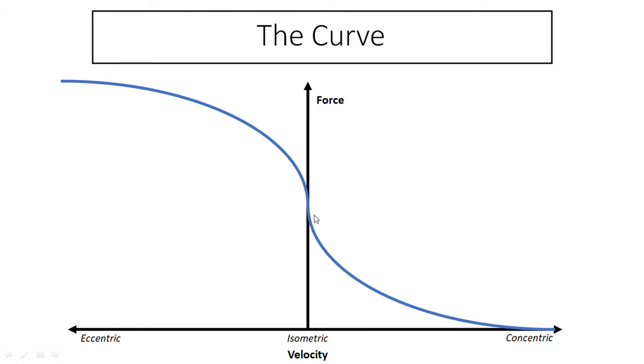If we then take that one rep max and we add 10% onto that, so over our one rep max, and we then basically try to squat that, there'll be a point in the lift where we can't push through. However, that point that we can't push through, we can actually probably hold that for a small amount of time before we can't hold it any longer. Even though we're not moving the bar, we can hold it in a single position, a load that's greater than our one rep max.